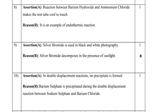Question 10: The assertion says no precipitate is formed in a double displacement reaction. The reason states that barium sulfate is precipitated during the double displacement reaction between sodium sulfate and barium chloride. The reason is correct, but the assertion is wrong — precipitate is indeed formed in double displacement reactions. Since the assertion is false, D is the answer.